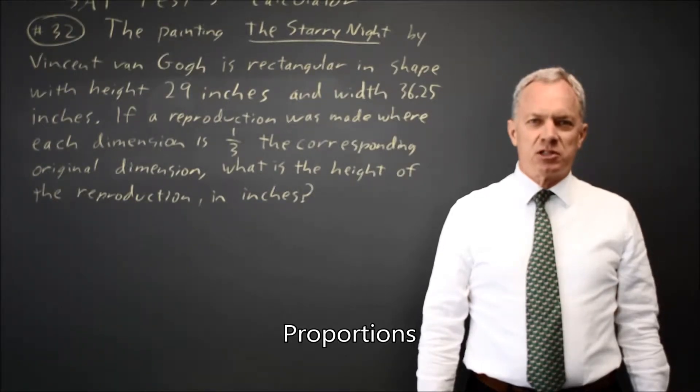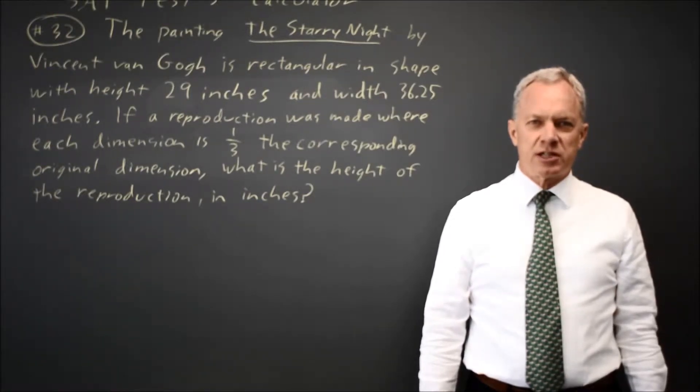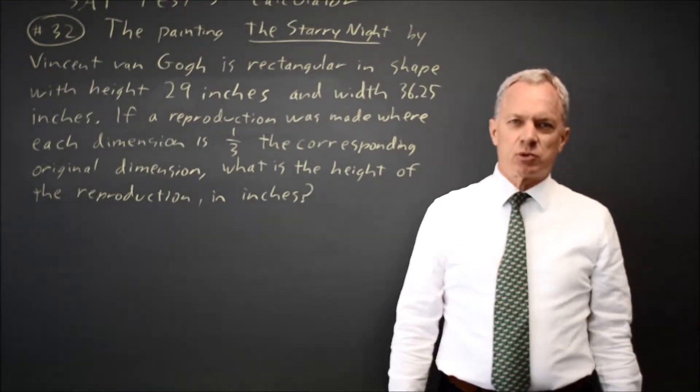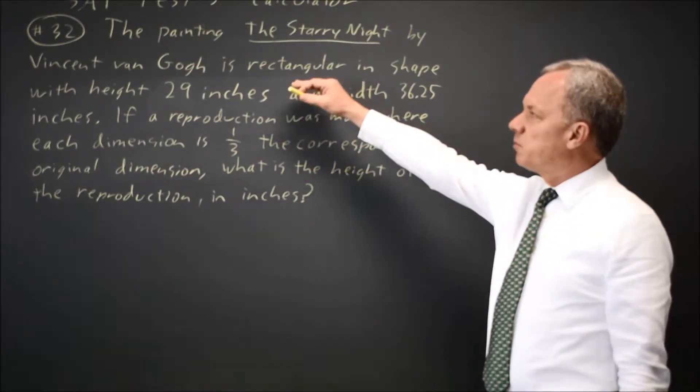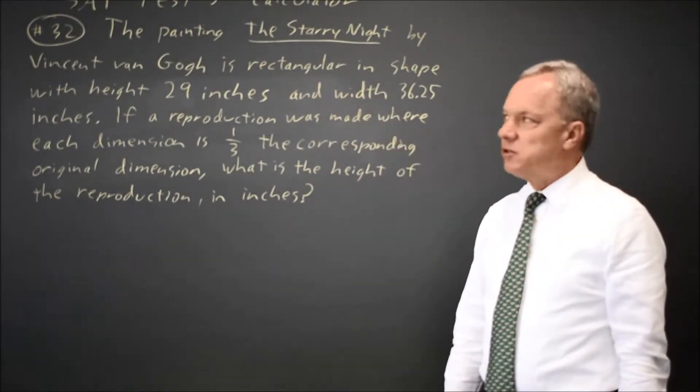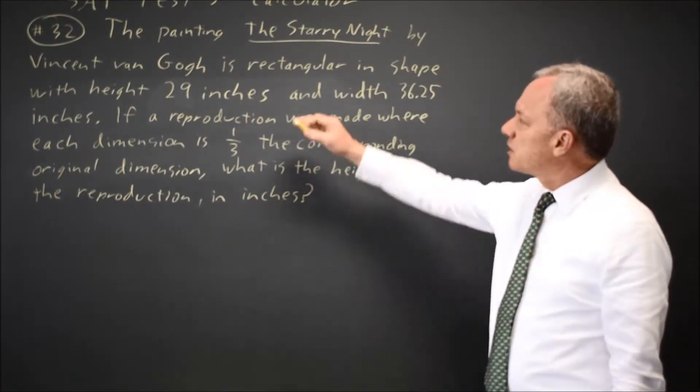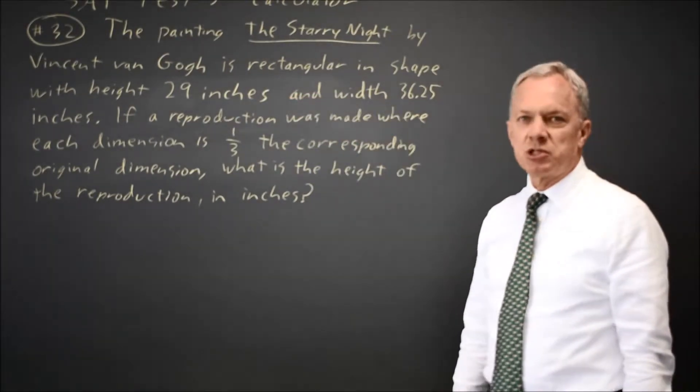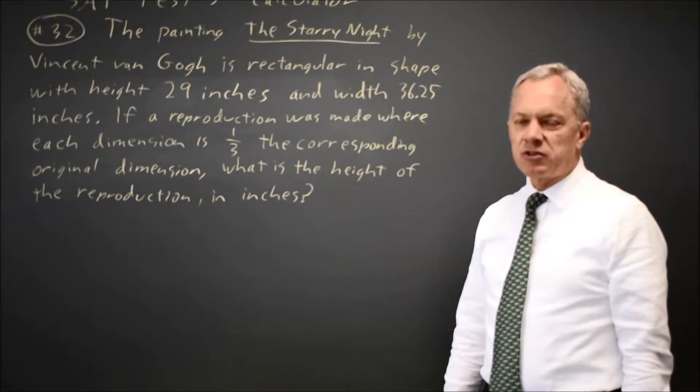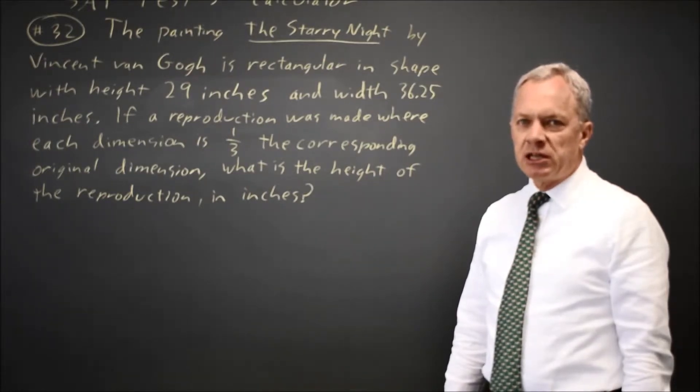This is calculator question number 32 from practice test 5 in the 2018 SAT prep book. The College Board describes the painting Starry Night by Vincent van Gogh and gives us dimensions with a height of 29 inches and a width of 36.25 inches. They ask for the height of a reproduction if all dimensions are one-third of the original dimensions.